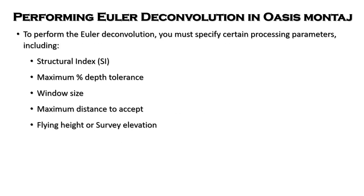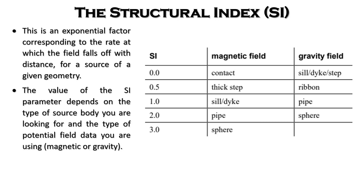To perform Euler deconvolution, certain processing parameters must be input to get reliable and acceptable results. These include, among other things, the structural index, the maximum percentage depth tolerance, the window size, maximum distance to accept, and the flight height or survey elevation.